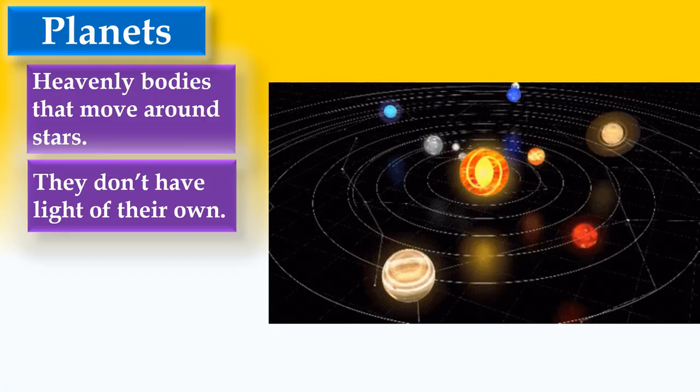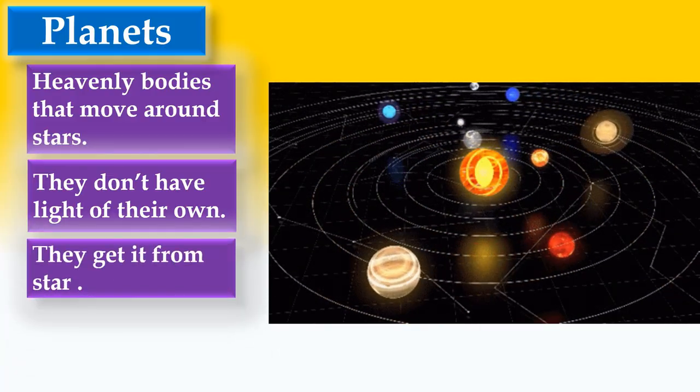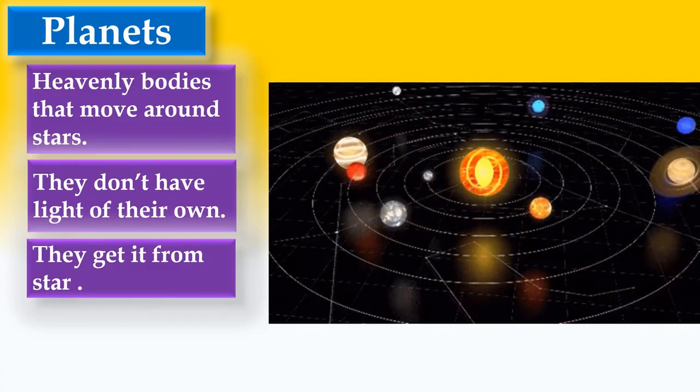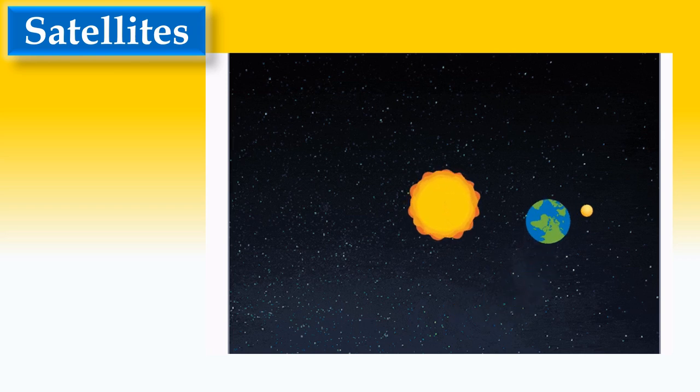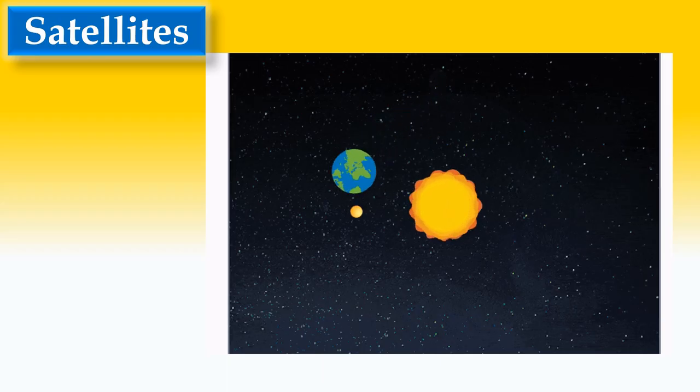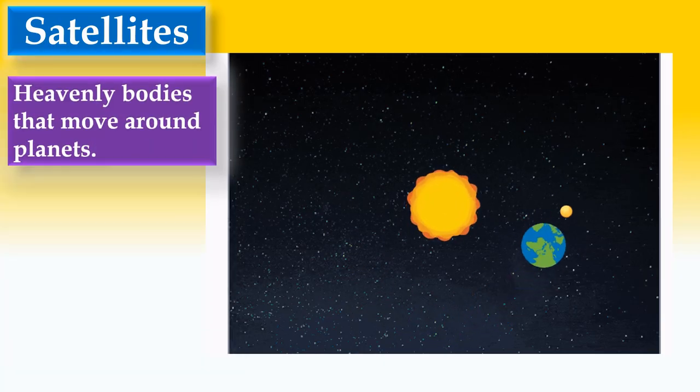Now let us see about satellites. Look at the image here. The Sun is at the center position. Earth is moving around the Sun, and the moon is moving around the Earth. In this case, the moon is called a satellite of the planet Earth.